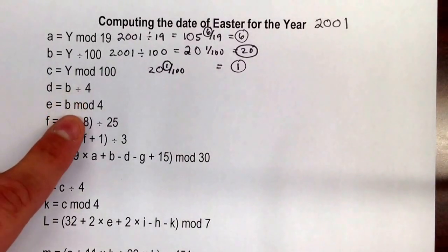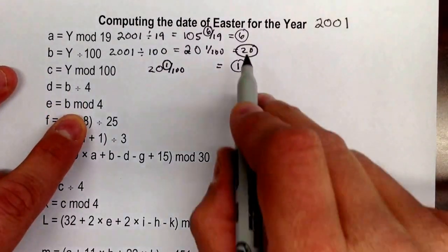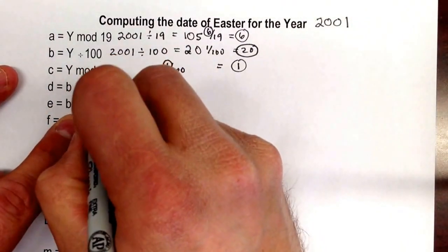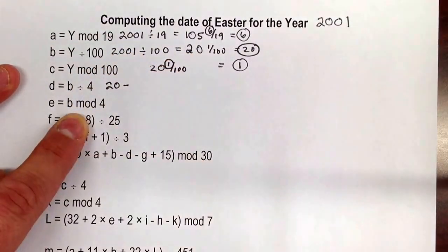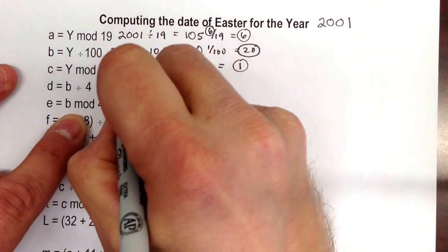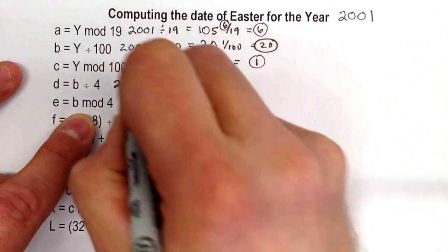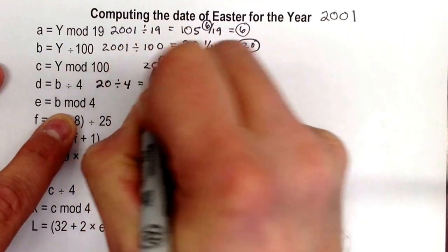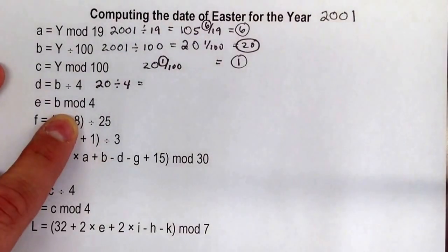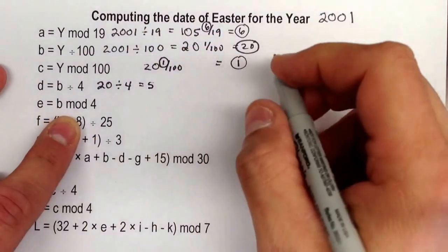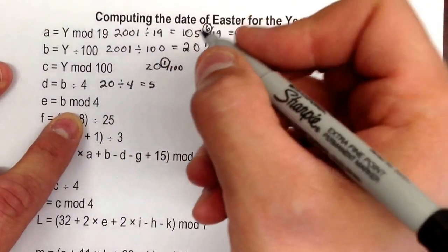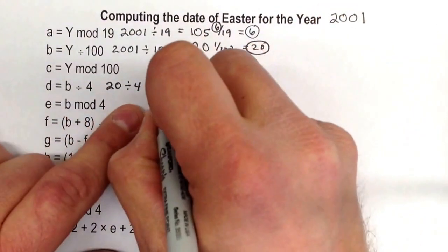Then we do the same thing for d and e. Again b, which we just found was 20. So 20 divided by 4. It ends up equaling 5, and there's no remainder. In this case we're not looking for remainders anyway, it's just the integer, so 5 is what it is.